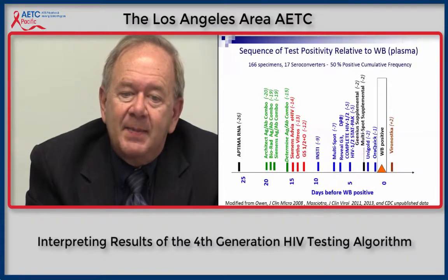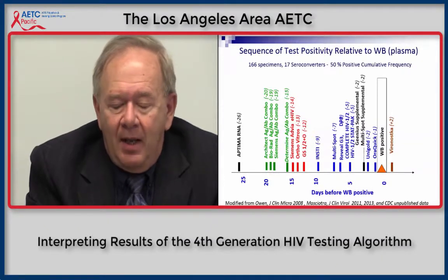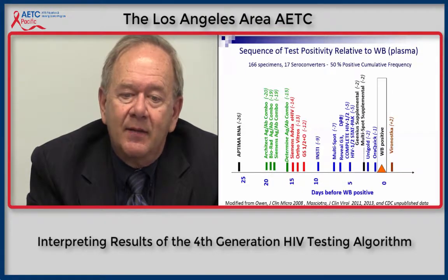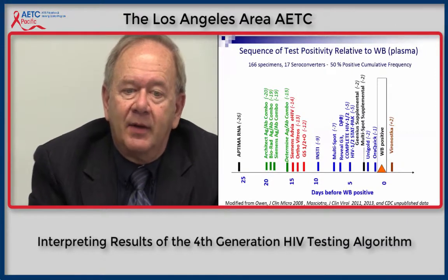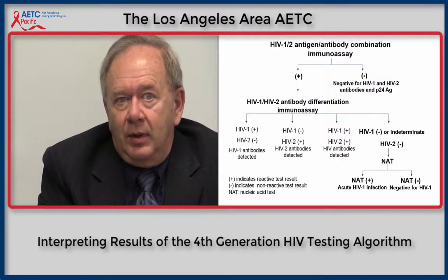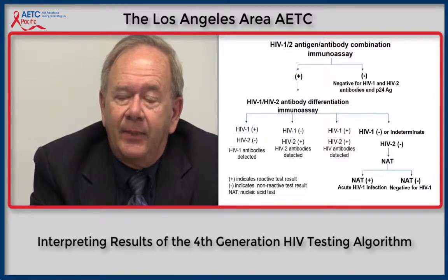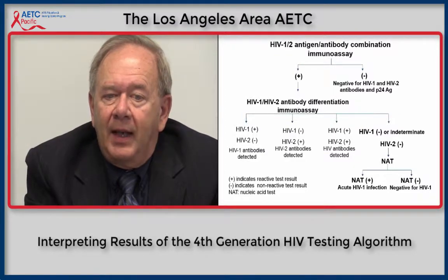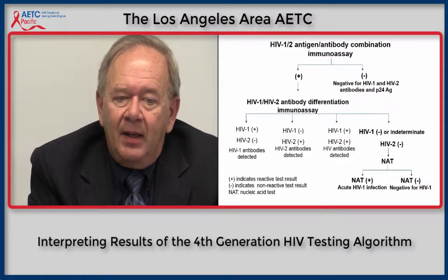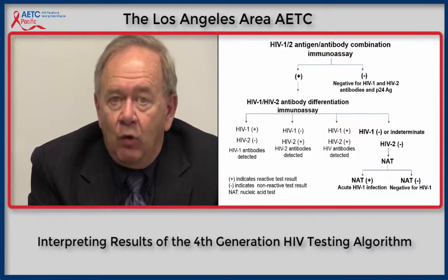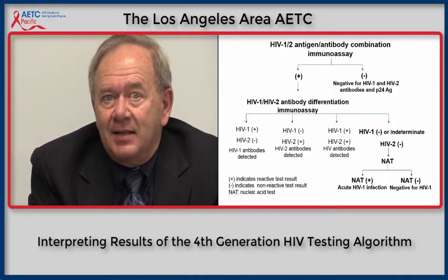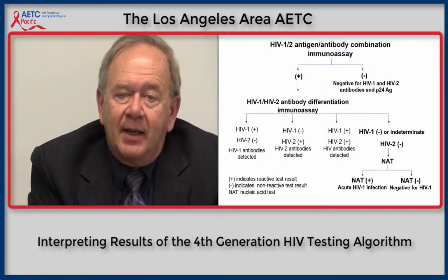When the Genios or the MultiSpot supplemental assay are used as part of the diagnostic algorithm, their timing — because of the number of markers that must be positive — is very similar to when the Western blot turns positive, within about one or two days. This depicts the new diagnostic algorithm recommended since June 2014. Testing begins with the fourth-generation HIV-1/2 antibody-antigen combination immunoassay. If negative, the specimen is considered negative for HIV. If positive, it should be followed by an antibody assay, preferably one that differentiates HIV-1 from HIV-2 antibodies.